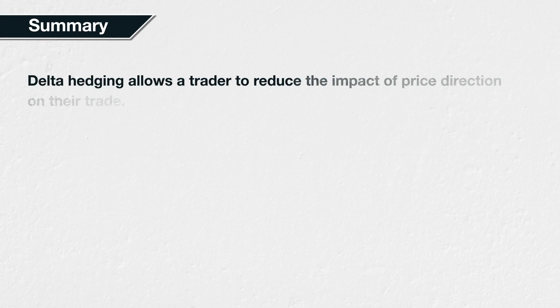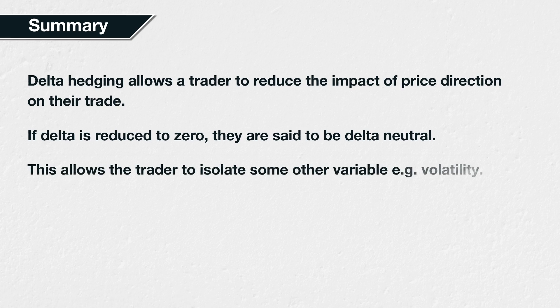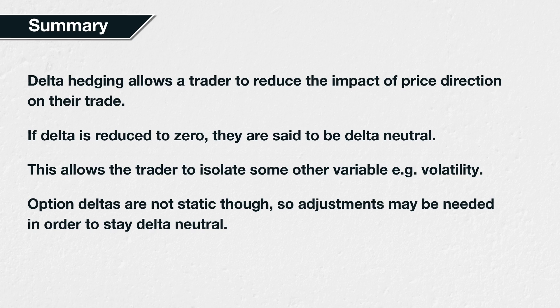In summary, delta hedging allows a trader to hedge price direction out of their trade. The effect that the direction of underlying price movements have on their position's profitability is greatly reduced. If the overall delta is reduced to zero, or very close to it, the position or portfolio in question is said to be delta neutral. This allows the trader to isolate some other variable that they wish to trade, for example volatility, without having to worry too much about whether the underlying price increases or decreases. That doesn't mean they can just set and forget the delta hedge though. Even if a trade is initially executed in a delta neutral manner, the hedge leg may need to be adjusted in order for the position to remain delta neutral. An options delta can be affected by several factors, including underlying price movement, implied volatility, and time.